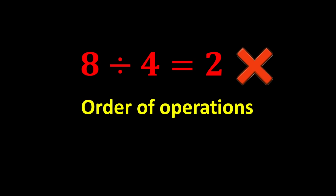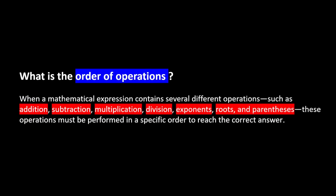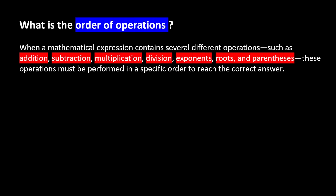The rule called the order of operations. What is the order of operations? When a mathematical expression contains several different operations — such as addition, subtraction, multiplication, division, exponents, roots, and parentheses — these operations must be performed in a specific order to reach the correct answer.